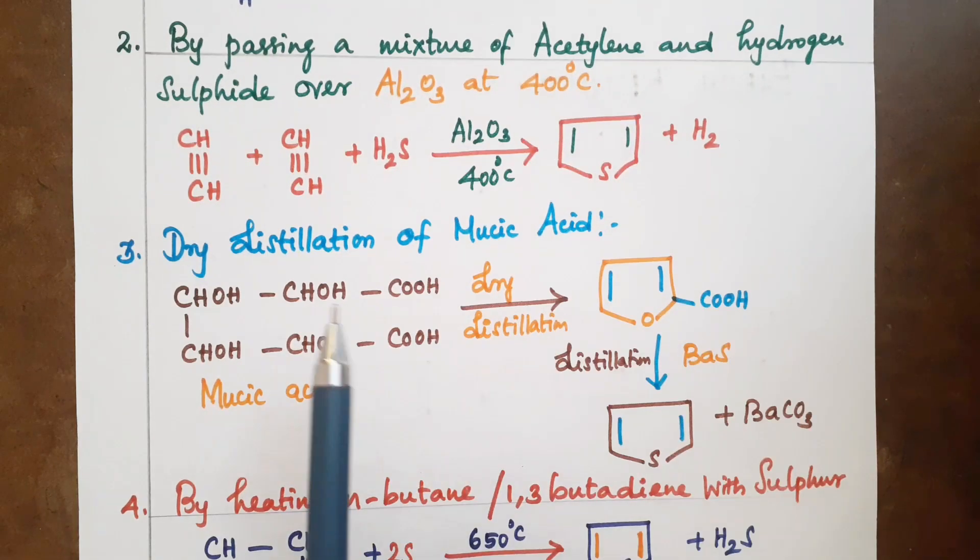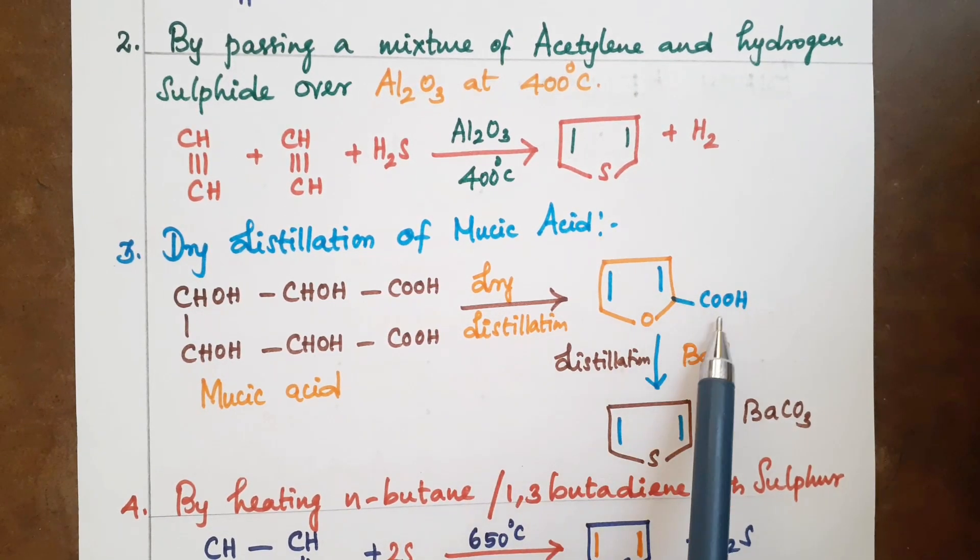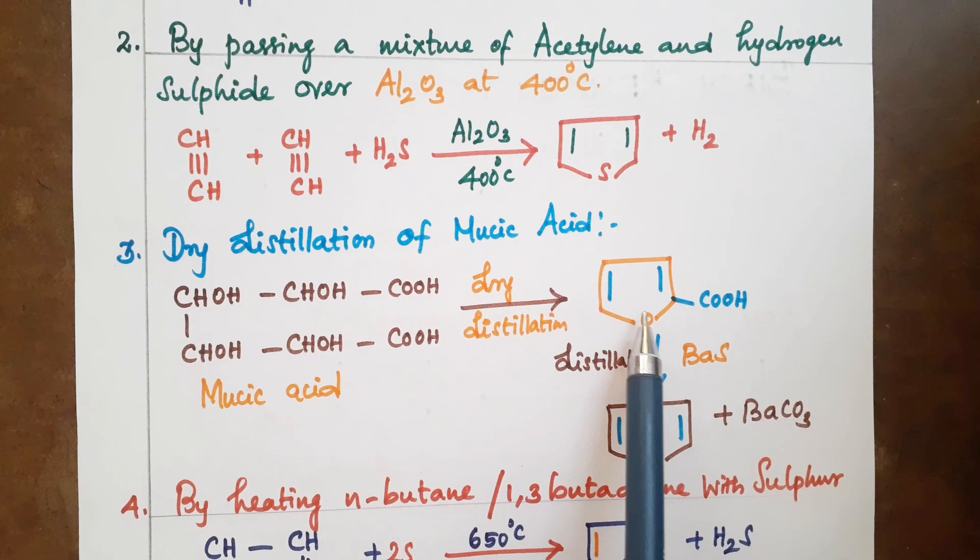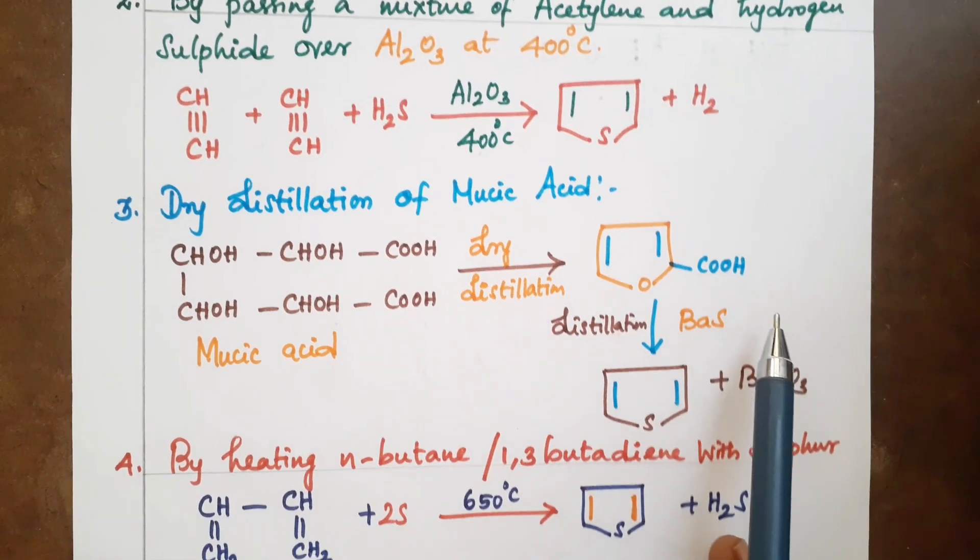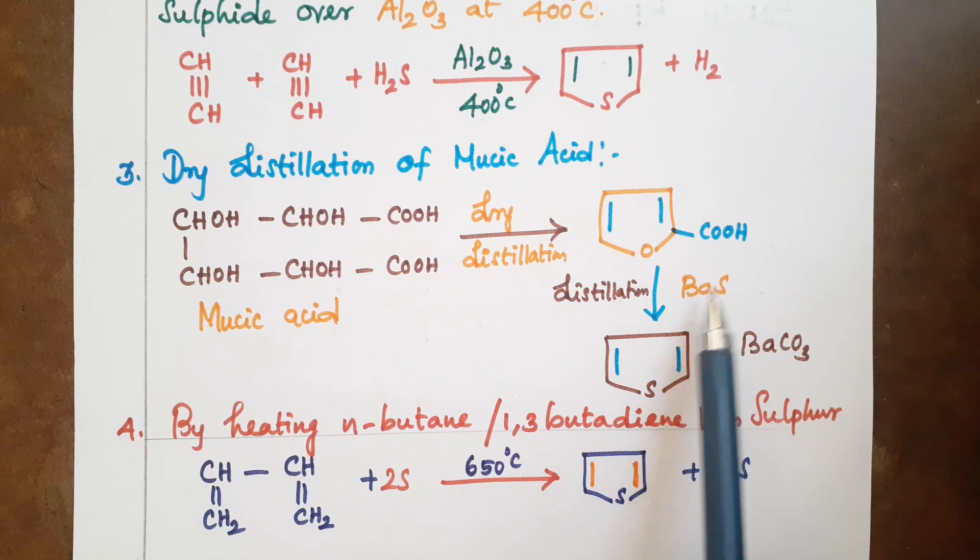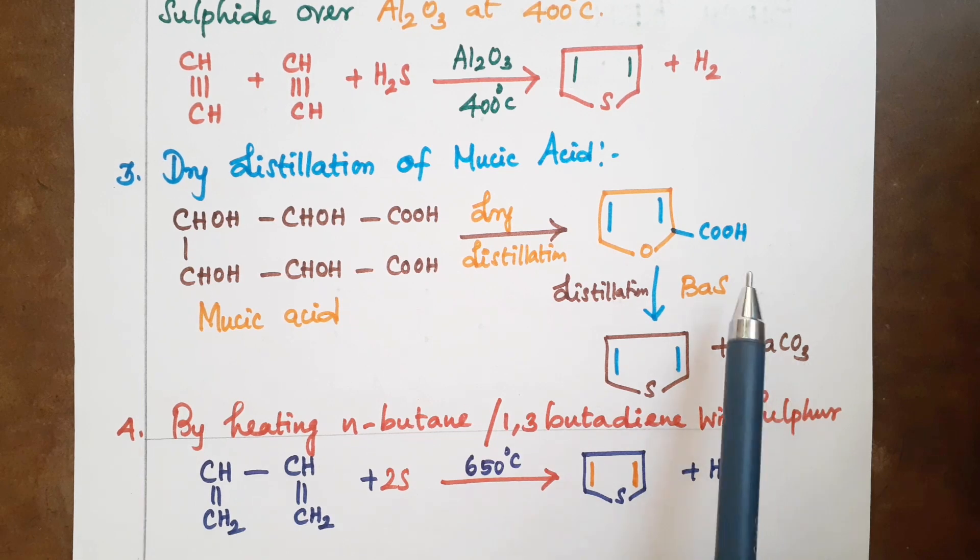Third: dry distillation of mucic acid. Mucic acid is dry distilled. First one is carboxylic acid. This is distilled in the presence of barium sulfide, producing barium carbonate.